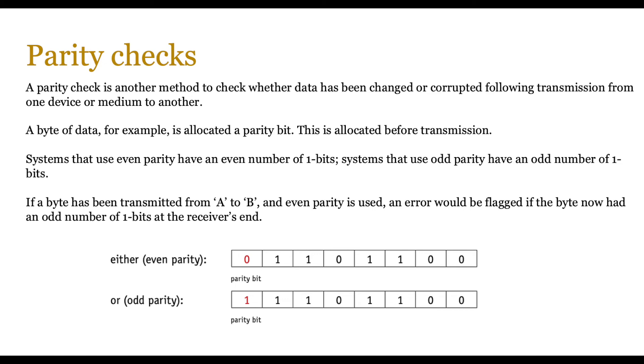Now, if a byte has been transmitted from computer A to computer B and even parity is used, an error would be flagged up if the byte now had an odd number of one bits at the receiver's end. Now, the parity bit is normally appended on the left-hand side at AS level, so make sure that you're familiar with that particular format.